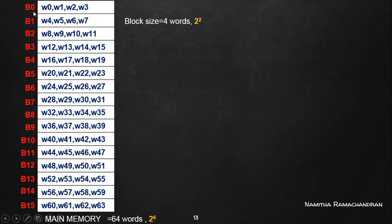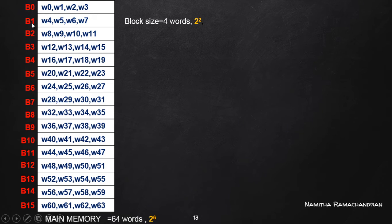The first block, the 0th block, contains 4 different memory words: the 0th word, 1st word, 2nd word, and 3rd word. The next block contains 4 consecutive memory words: the 4th word, 5th word, 6th word, and 7th word.